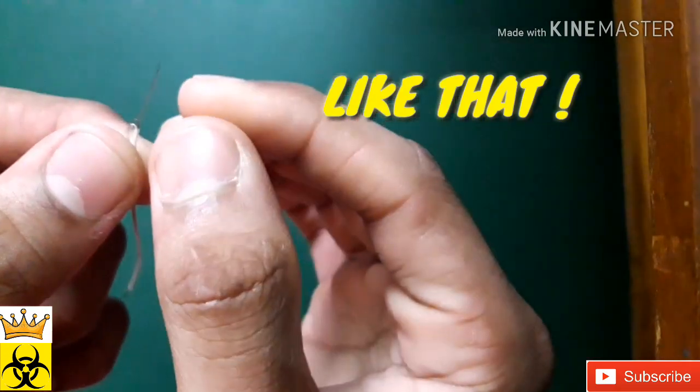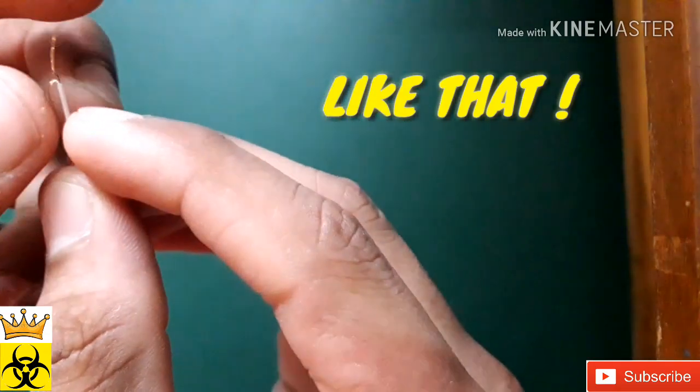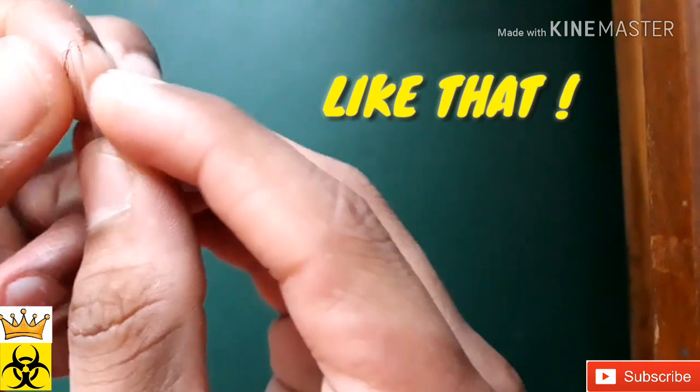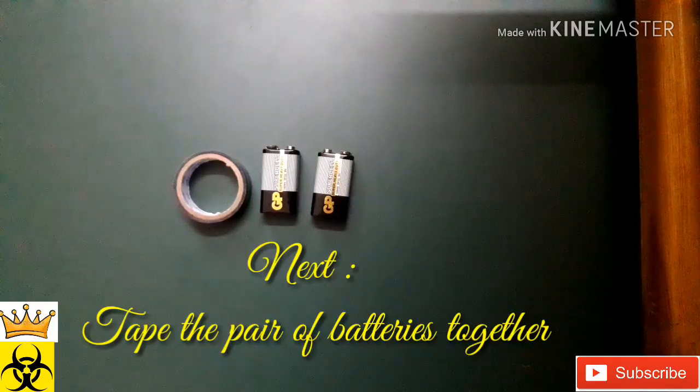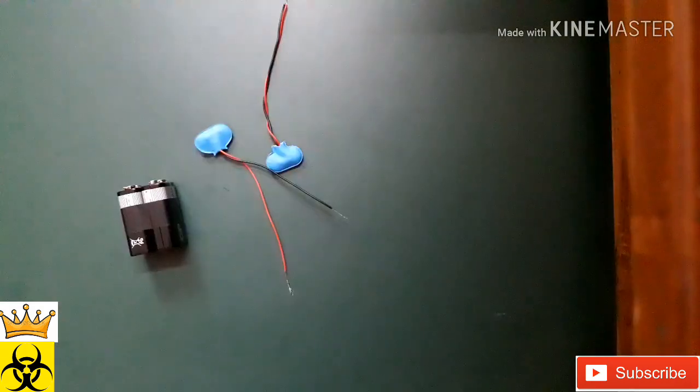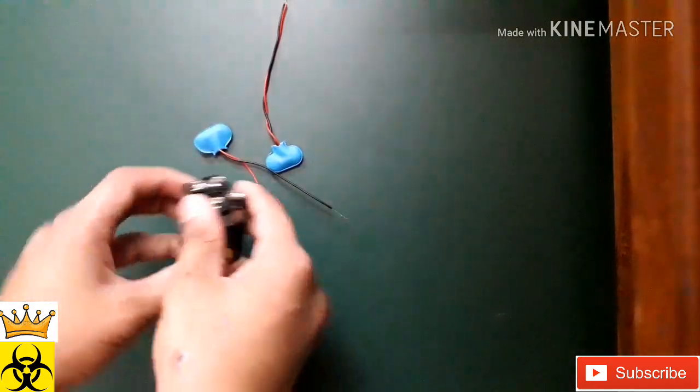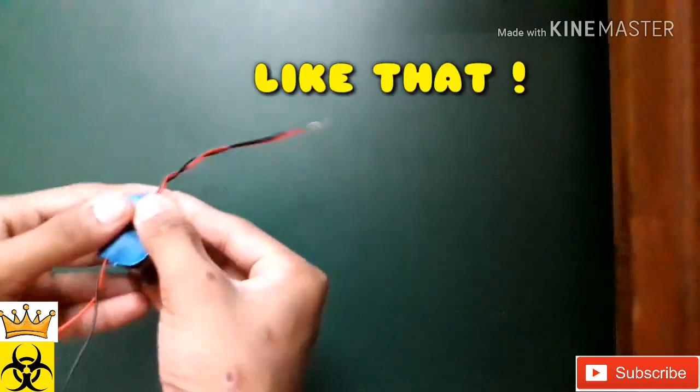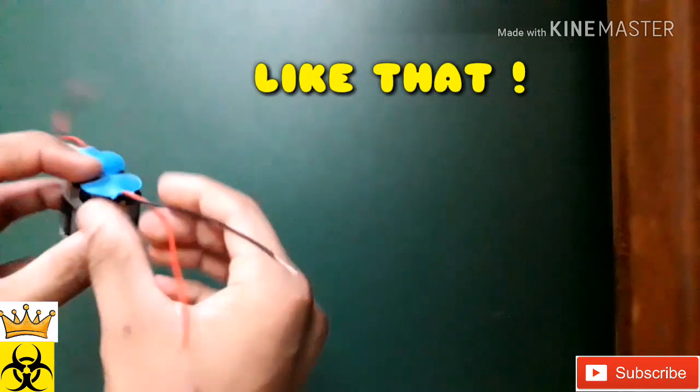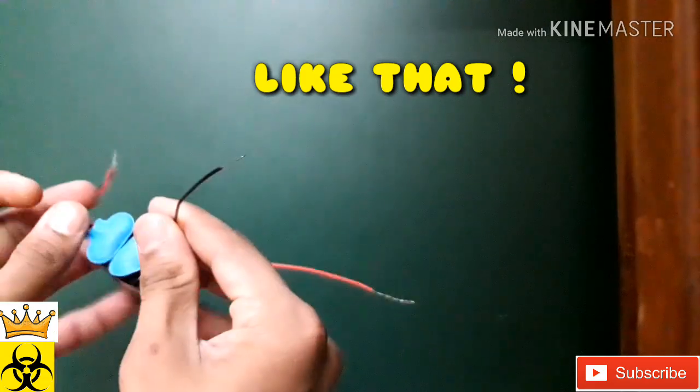After taping the batteries, put each of the wires into their respective positions. Then join negative to negative wires by twisting them firmly.